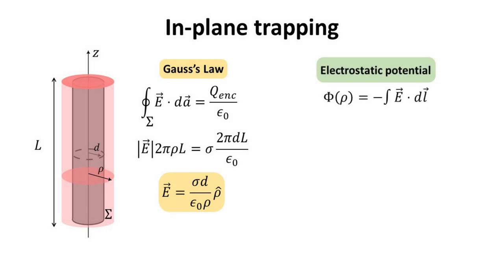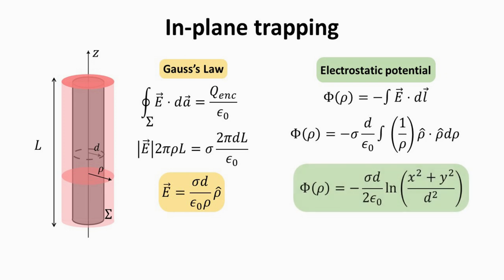To obtain the electrostatic potential, we recall that it is the line integral along some path of the electric field. Since the field has cylindrical symmetry, the potential will not depend on the coordinate Z or the azimuthal angle Φ. Plugging in the expression for the electric field that we just found, we obtain the electrostatic potential as shown. It is proportional to the natural log of the ratio between the distance from the axis and the diameter of the rod.